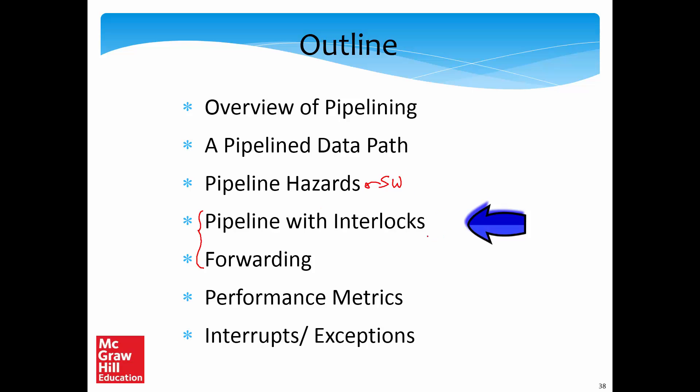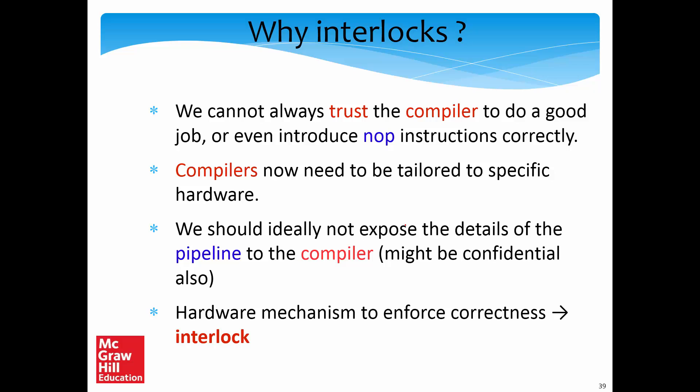To alleviate these problems, let's assume that software does nothing at all and everything is taken care of in hardware. Let's look at interlocks as one hardware mechanism. We cannot always trust the compiler to insert NOP instructions correctly. Also, software solutions tie the compiler to hardware, expose hardware details that manufacturers may not want revealed. That's the reason we need a mechanism entirely implemented in hardware — it's called an interlock.